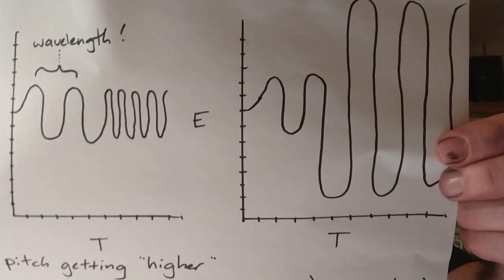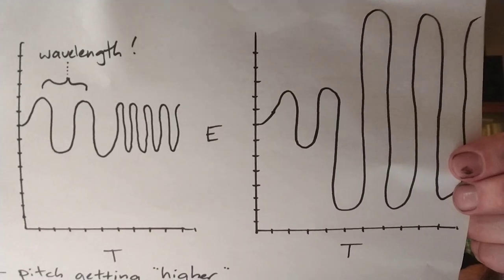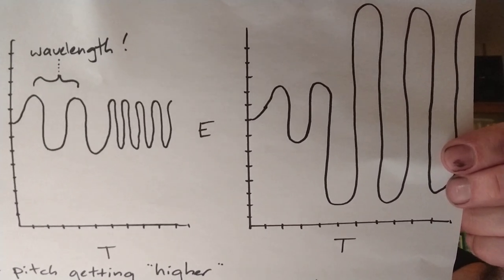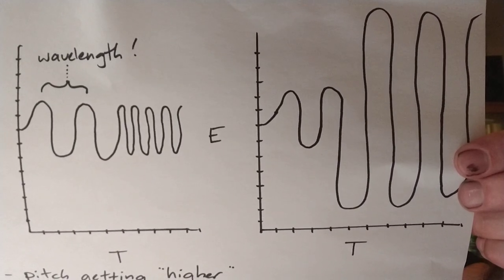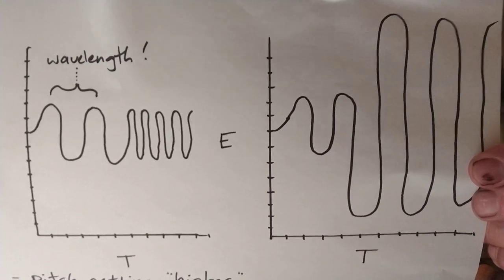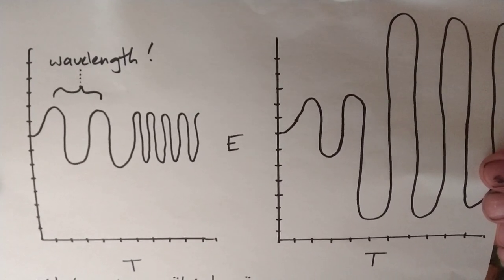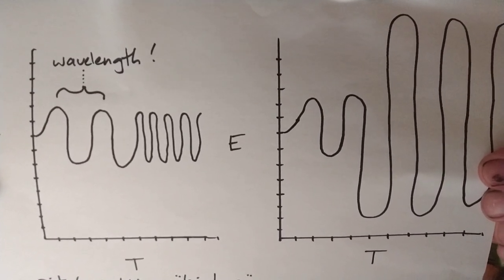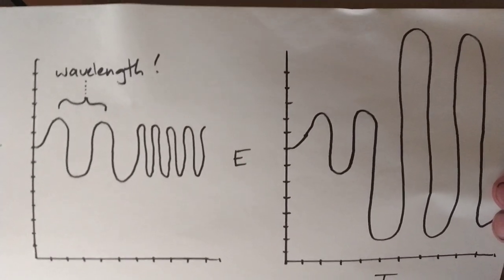Another way of understanding frequency is to speak in terms of wavelength — two different terms for describing the same thing. A wavelength is the distance from one peak of a wave to the peak of the next wave. If you have waves occurring less frequently, there's going to be more length between those peaks. So a longer wavelength corresponds to a lower frequency, and a shorter wavelength corresponds to a higher frequency.